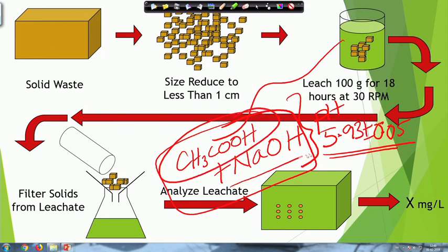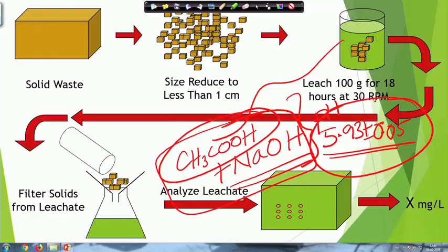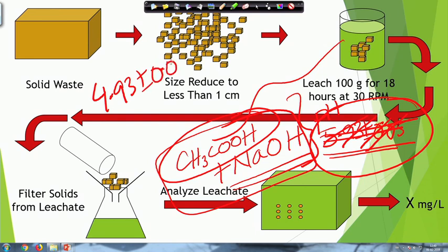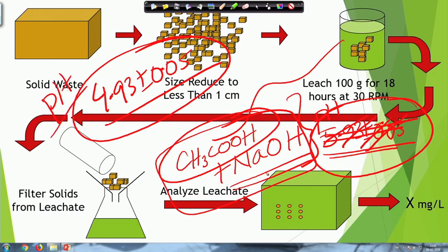Sodium hydroxide is added to make it a buffered solution — meaning resistance to pH change. We want to maintain a pH of 4.93 ± 0.05. Acetic acid is a weak acid and does not have much buffering capacity on its own, so we add sodium hydroxide to have a buffered solution at pH 4.93.